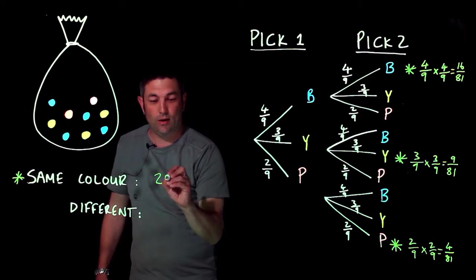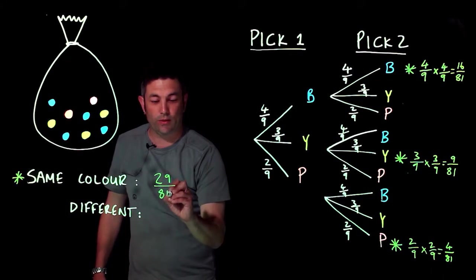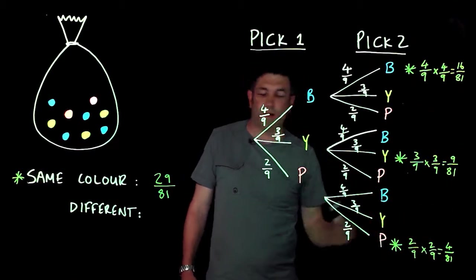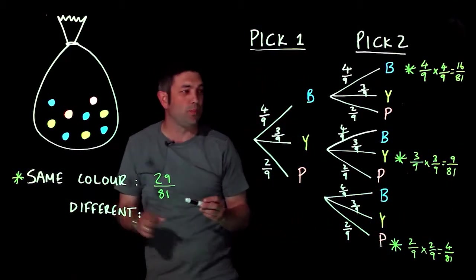Which gives me 29 over 81. Okay, so 16, 9, 25, and another four gives me 29. So that's the probability of the same color.